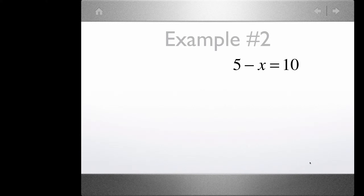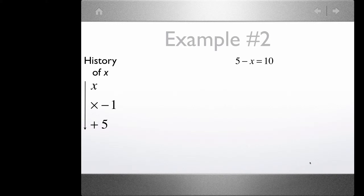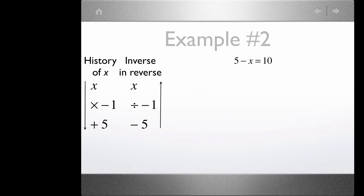In this next example, this looks like a one-step equation, but it's really two steps — the second step is hidden. The first thing that happens to x is this subtraction, which we record as multiplying x by negative 1. Then we add 5 to that. The inverse and reverse is to subtract 5 and divide by negative 1.